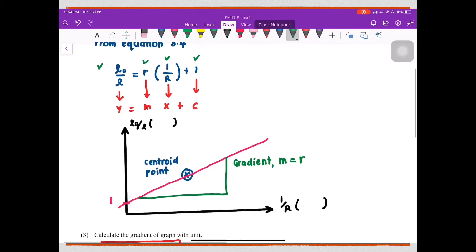Therefore, from here we can state that the gradient of the graph represents the value of internal resistance.